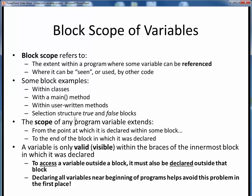Now to this list, we must add the true and false blocks of any type of selection structure. The common thread in all these examples is the presence of some kind of statement block. Remember that when we refer to a block, we're really just talking about a pair of open and closed curly braces and all the program real estate between them. So the scope of any program variable extends from the point at which it's declared inside of some block to the end of the block inside which it was declared.